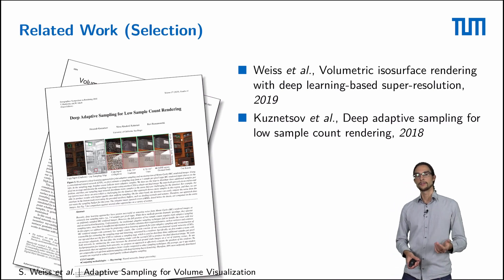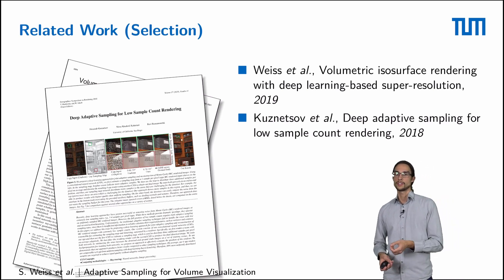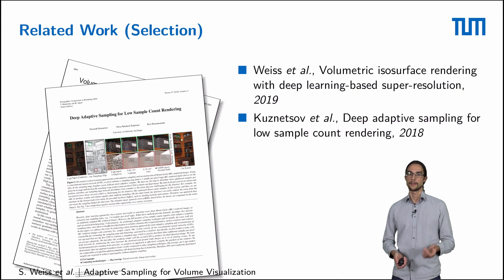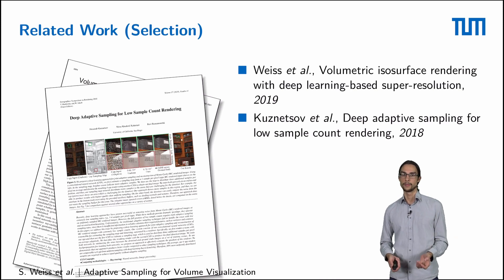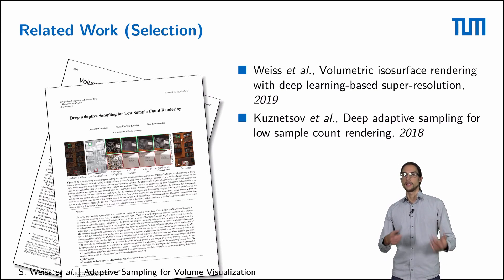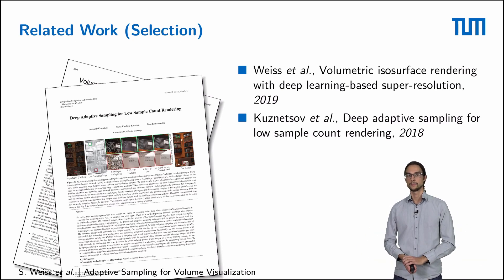However, for direct volume rendering, one sample per pixel is already enough for a noise-free image. Therefore, we are more interested in where to place samples between zero and one — so where at all and where not.